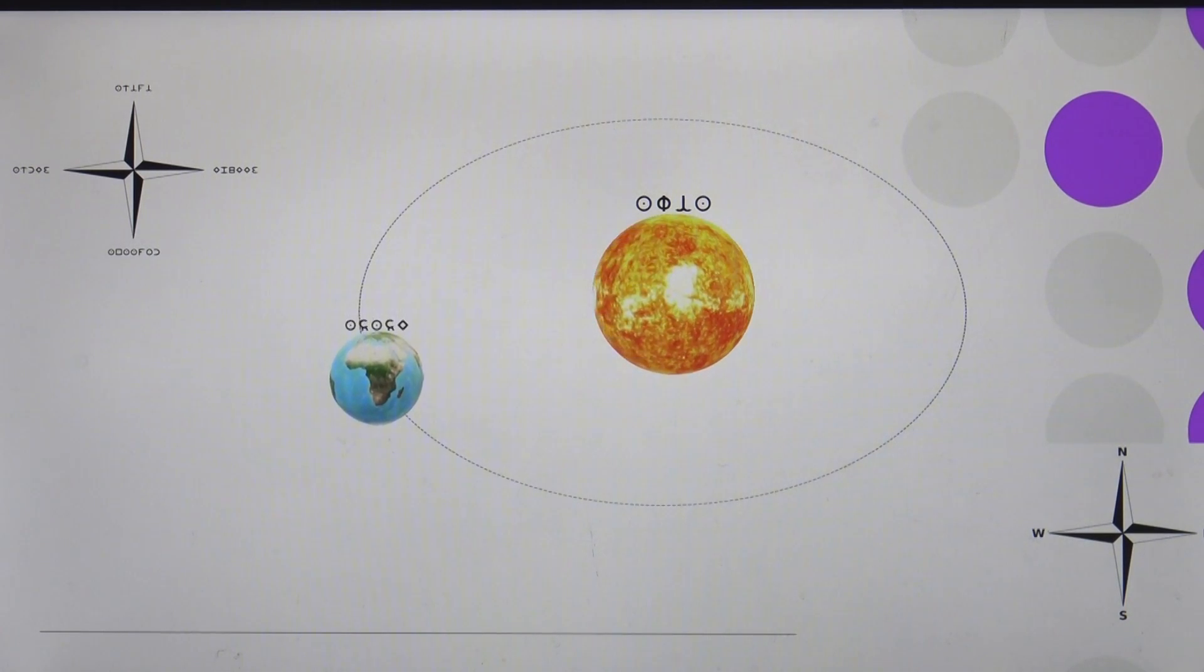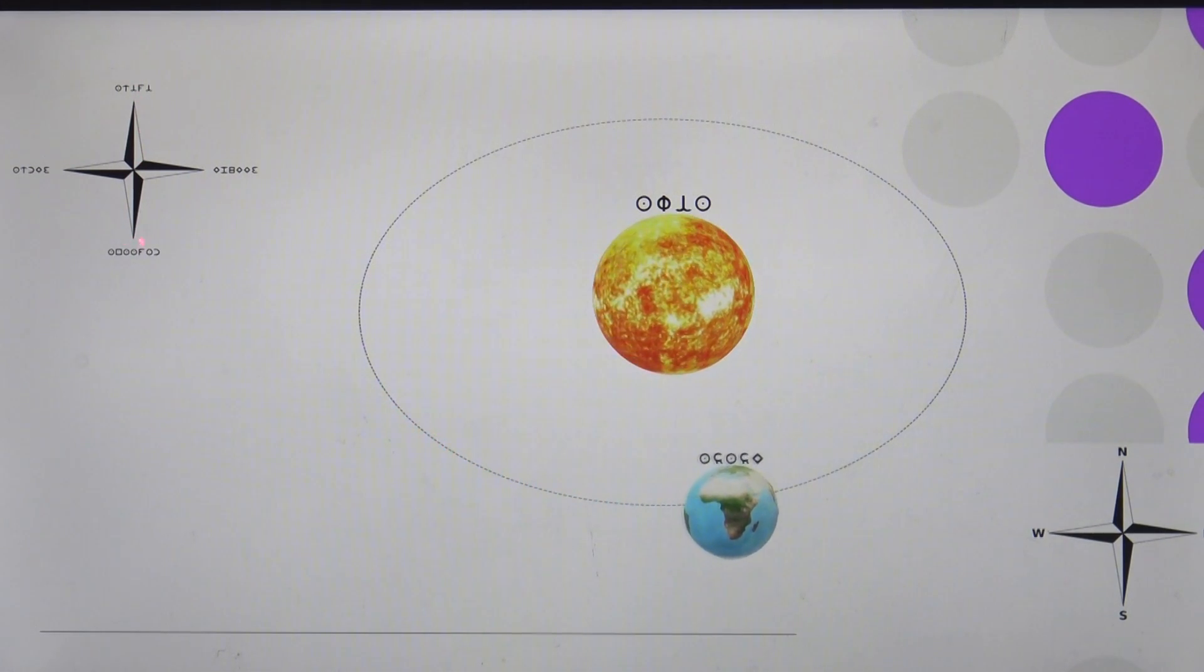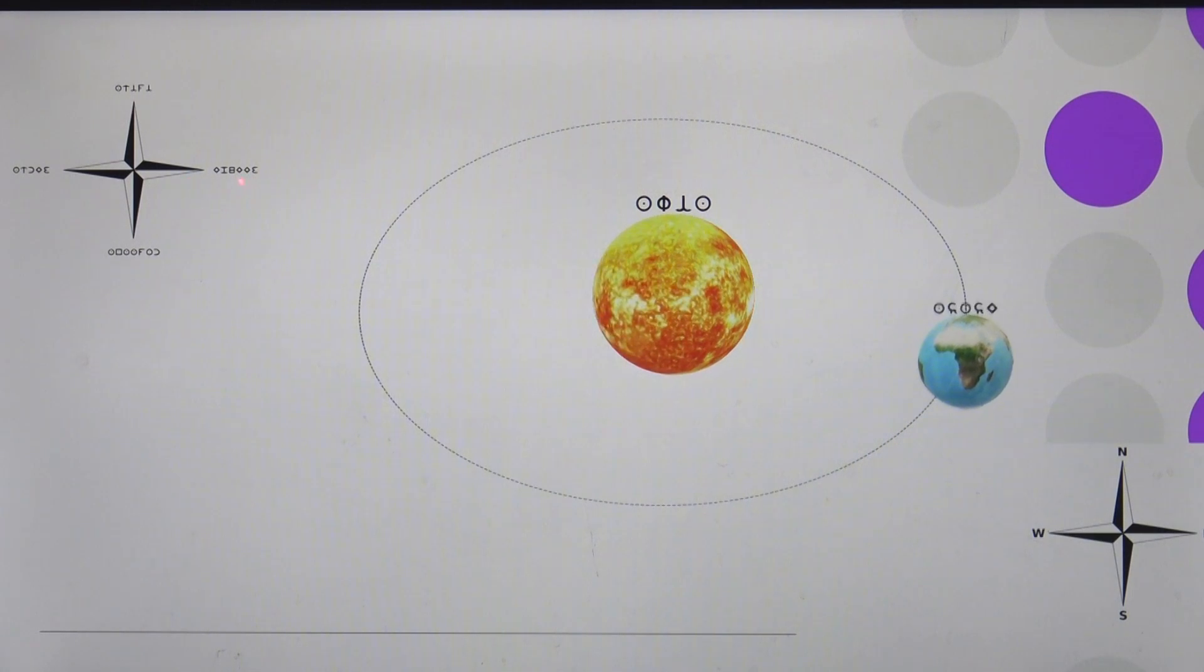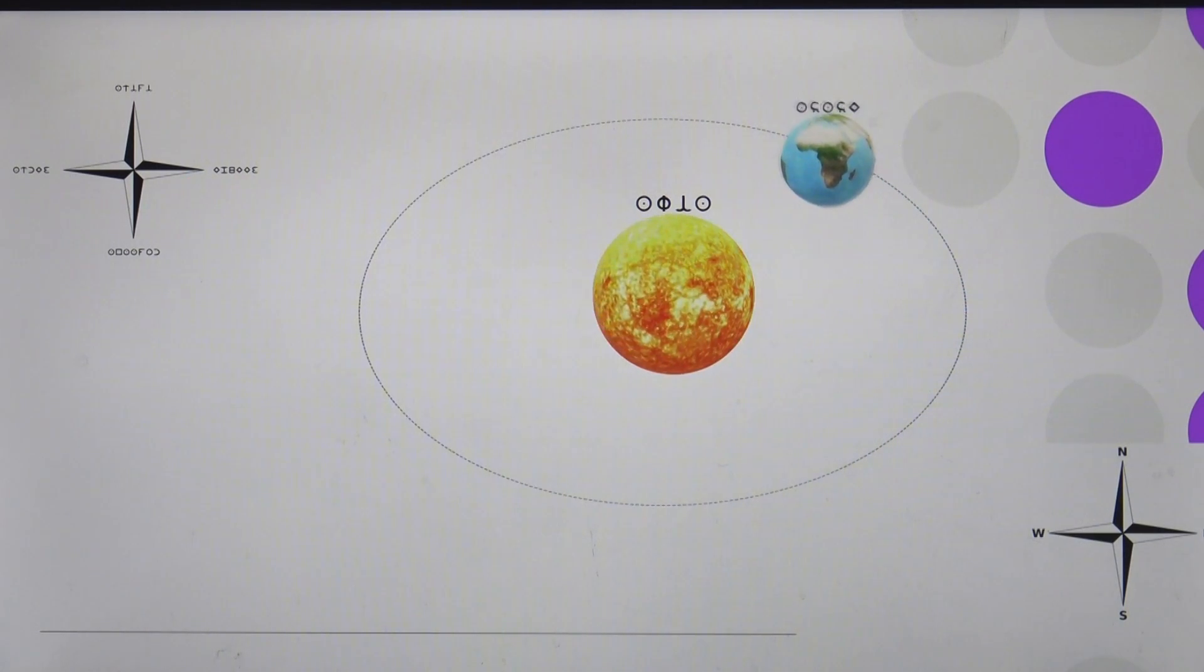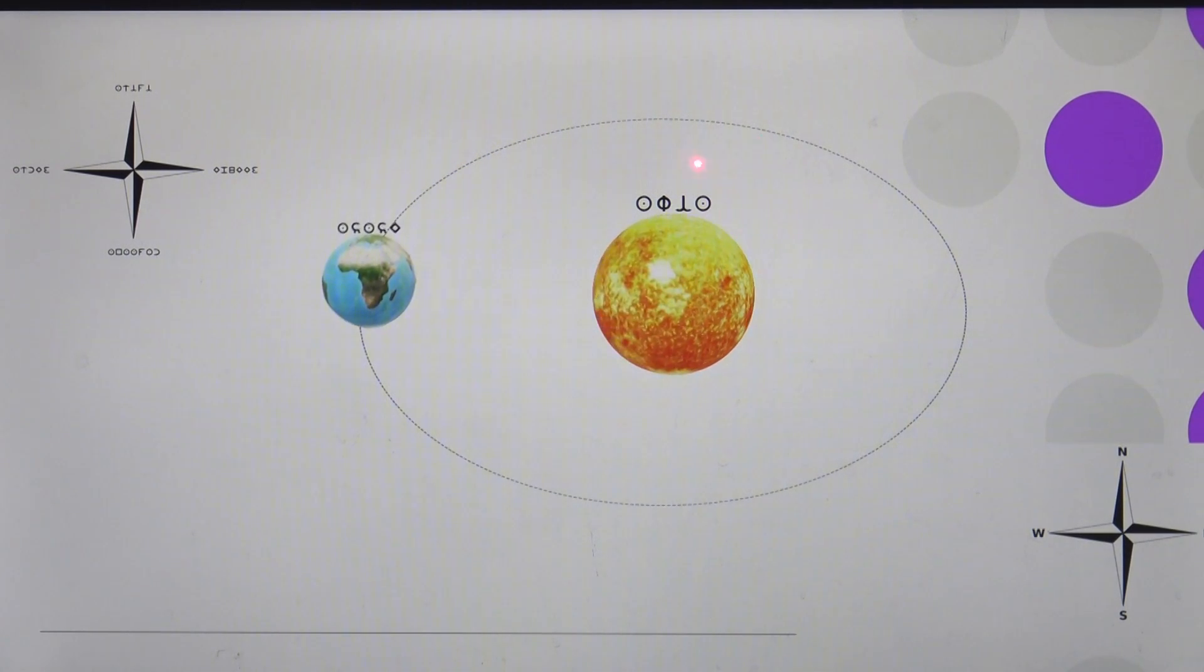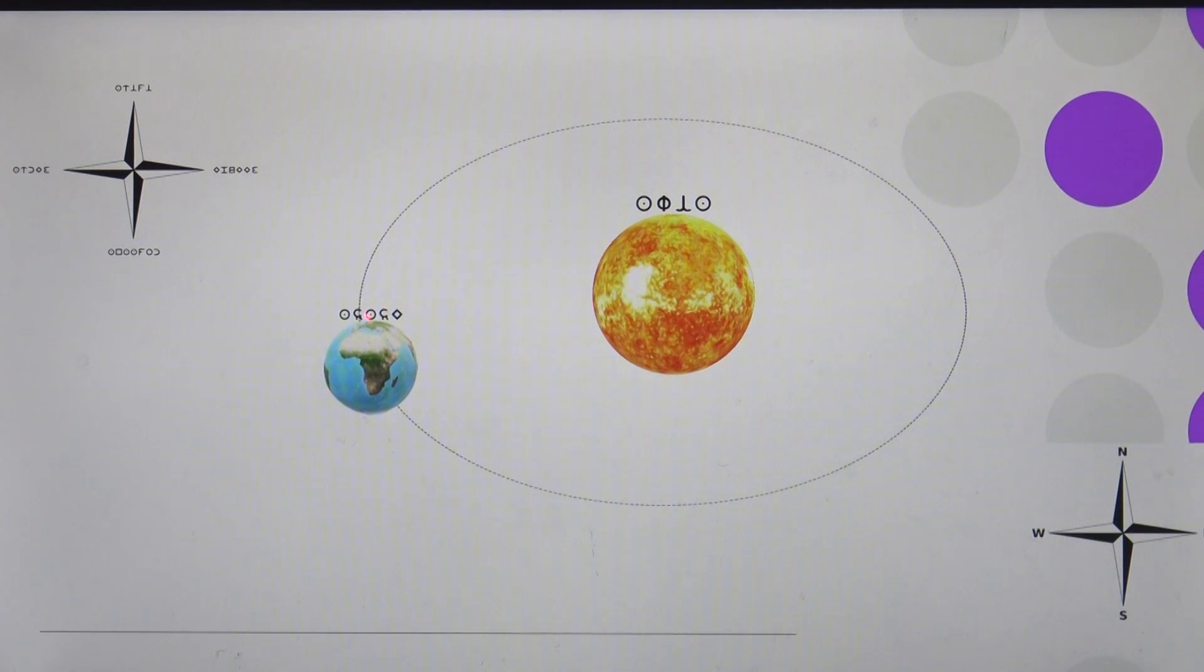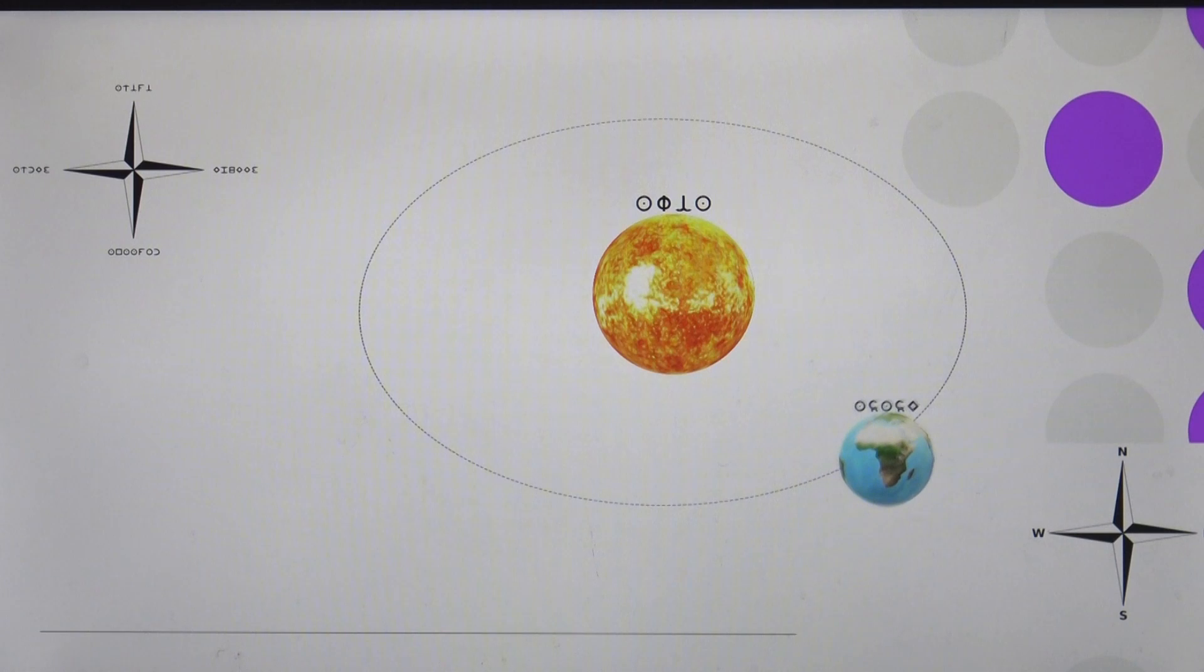Once again, north is Atifi, Anafo is south, Apuea is east, Atoe is west. The Sun is Owia and the Earth is Asase, and the world is Wiase, which simply means anything under the Sun. The sky is Awiem.